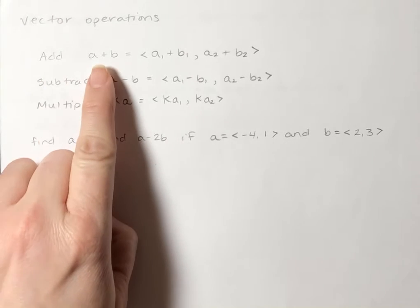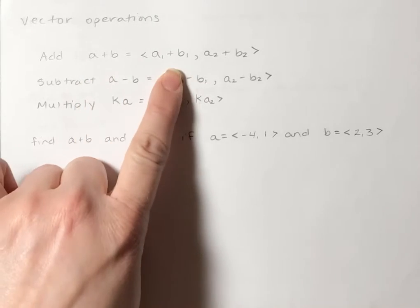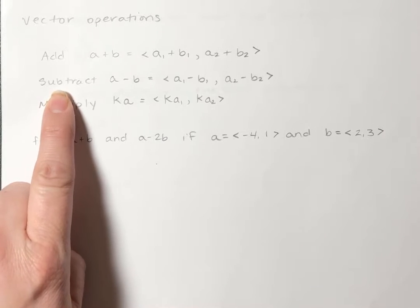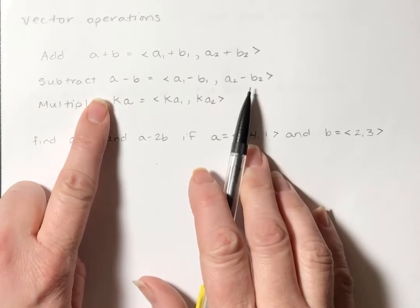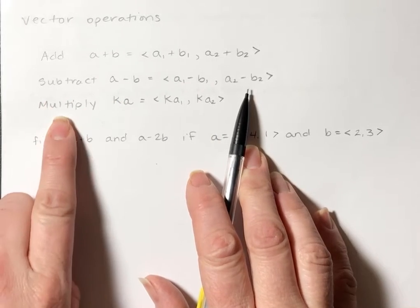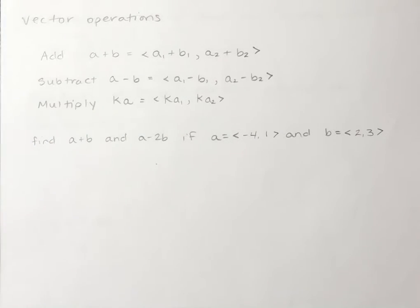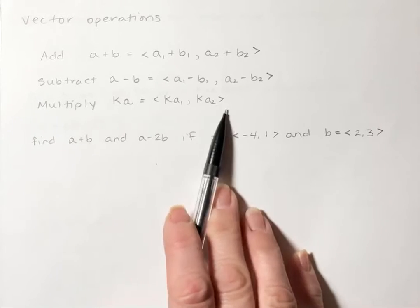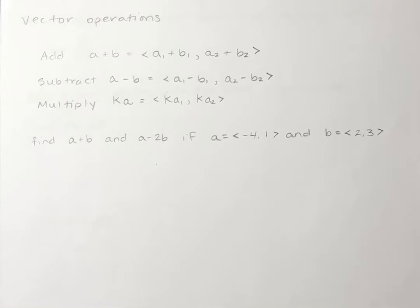If you have the vectors in component form you can just take them and add the X's and add the Y's. If you want to subtract two vectors you can subtract the X's and subtract the Y's. And if you want to multiply the vector by some scalar you just multiply every number by that scalar, essentially using the distributive property.